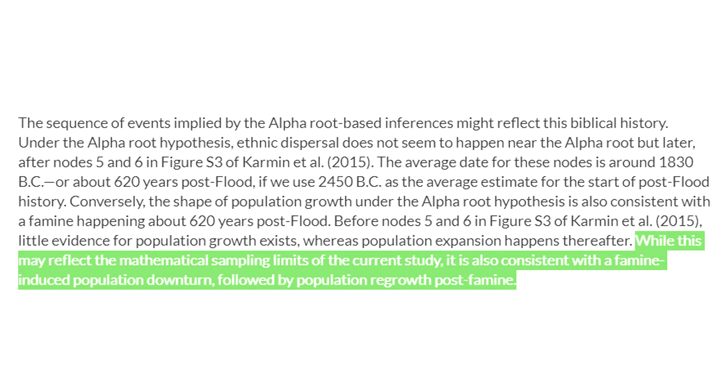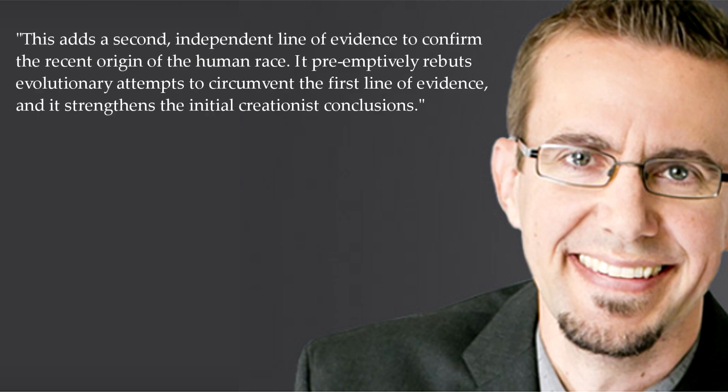A global famine would dramatically stunt population growth and be detected in genetic branch analysis. In regards to the importance of these new results, Jensen told the Institute for Creation Research staff: this adds a second independent line of evidence to confirm the recent origins of the human race. It preemptively rebuts evolutionary attempts to circumvent the first line of evidence, and it strengthens the initial creationist conclusions.